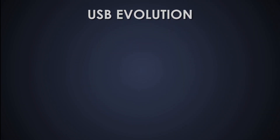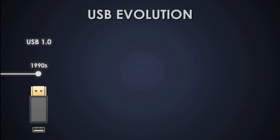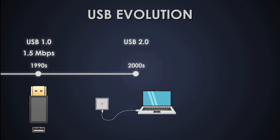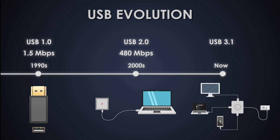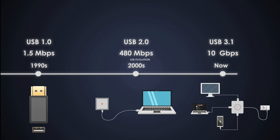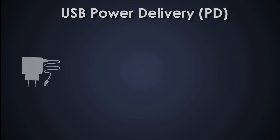Let's take a quick journey through the evolution of USB. USB started as a simple data transfer technology in the 1990s with USB 1.0 supporting just 1.5 Mbps speed. Then came USB 2.0 which brought 480 Mbps speed. Now we use USB 3.1 Gen 2 which supports up to 10 Gbps speed. But USB didn't stop there — it needed to handle more power, and that's where USB Power Delivery came into the picture.